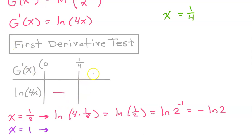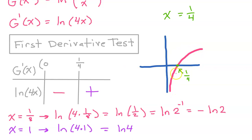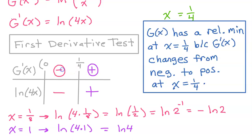So we have negative values in the first interval. For the next interval, we pick a value greater than one-fourth — let's use x equals 1. That gives the natural log of 4 times 1, which is just the natural log of 4, which is clearly positive. If you're familiar with graphs of logarithmic functions, you're not surprised that it is negative on the left and positive on the right. We conclude that capital G of x has a relative min at x equals one-fourth because capital G prime changes from negative to positive there. The original function G of x changes from decreasing to increasing at x equals one-fourth.